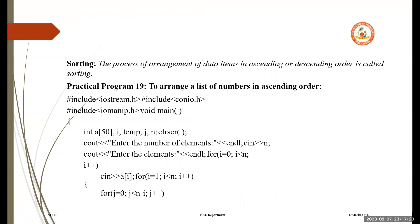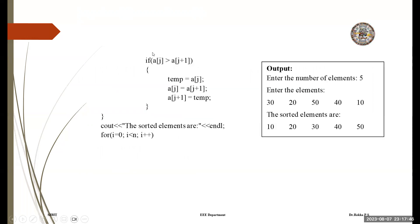The process of arranging data elements in ascending or descending order is called sorting. To sort numbers, first read the number of elements and the array values. Then apply the condition: if A[j] > A[j+1], swap them; otherwise keep them. For example, if elements 30, 20 are entered randomly, after sorting the result is 10, 20, 30, 40 in sequence. Compare element j with j+1 — if greater, swap; otherwise proceed to the end.